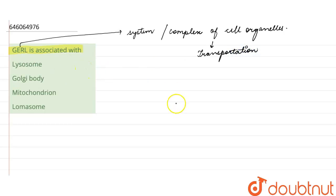The cell organelles that are associated with GERL are Golgi, endoplasmic reticulum, lysosomal complex.